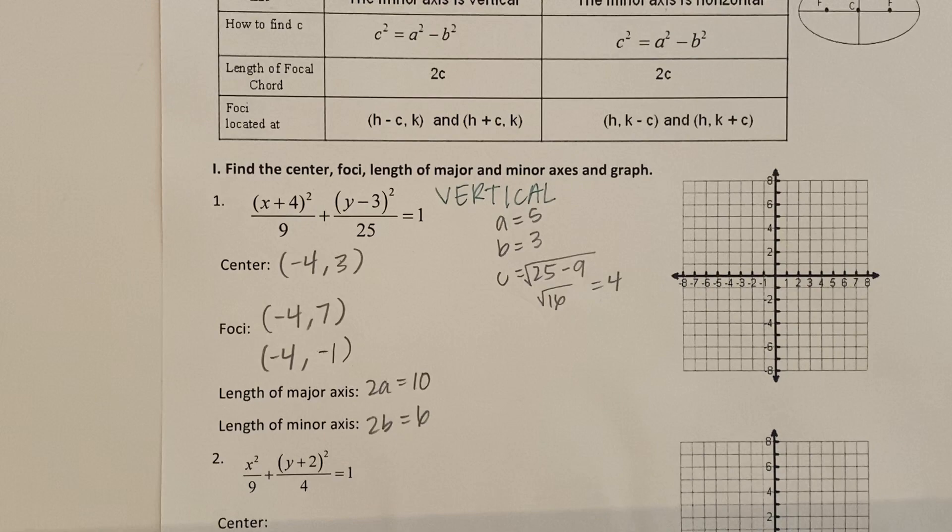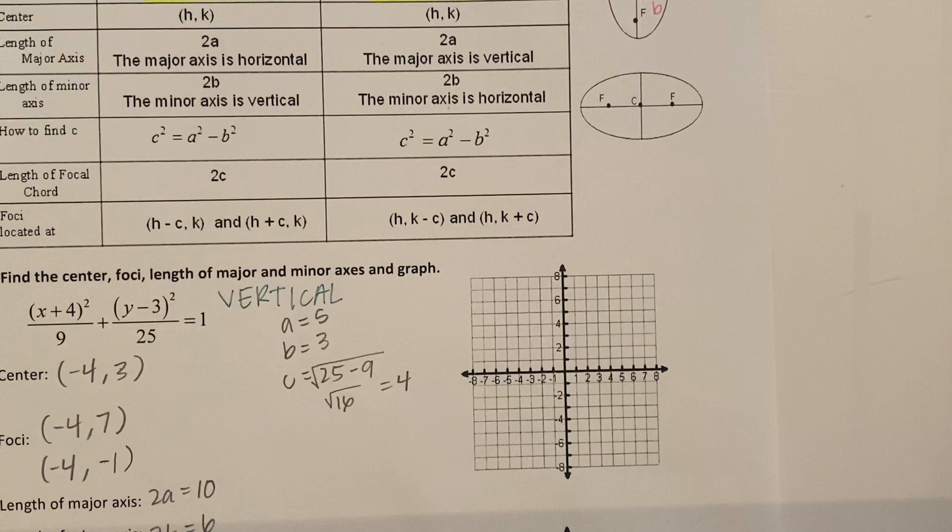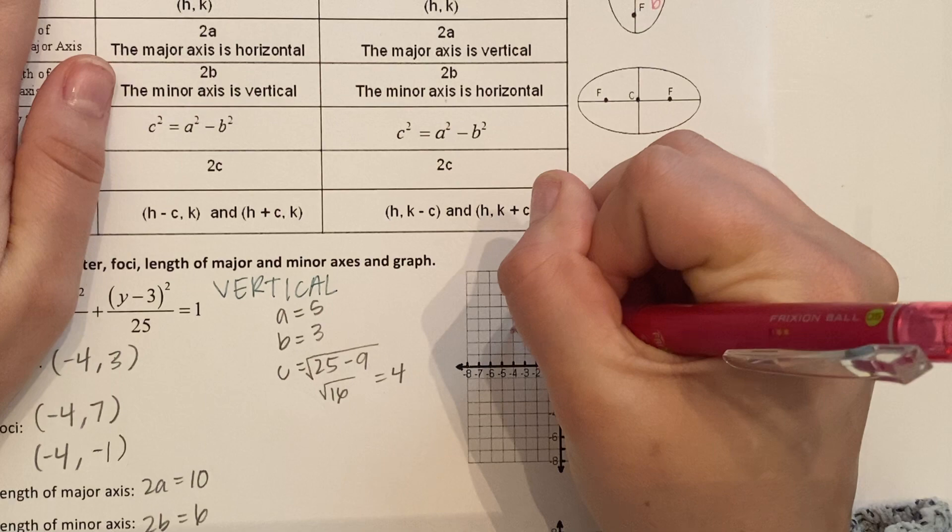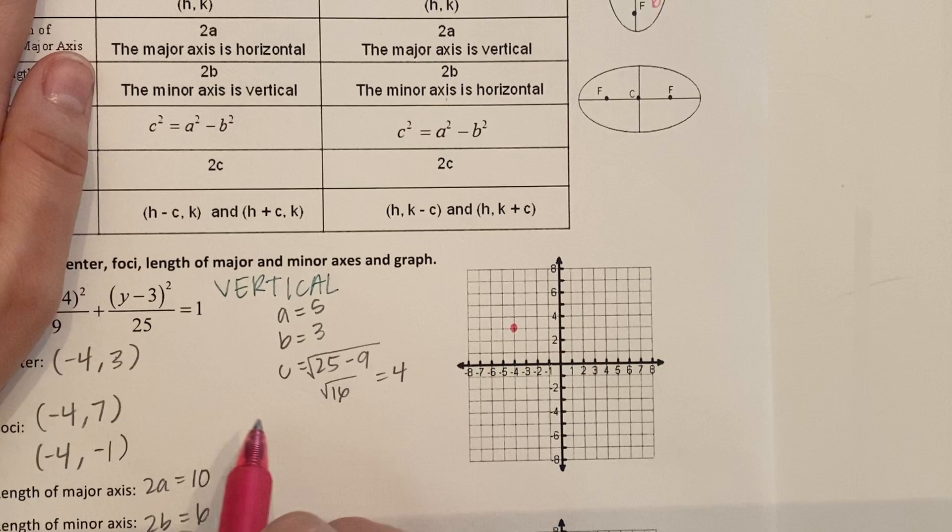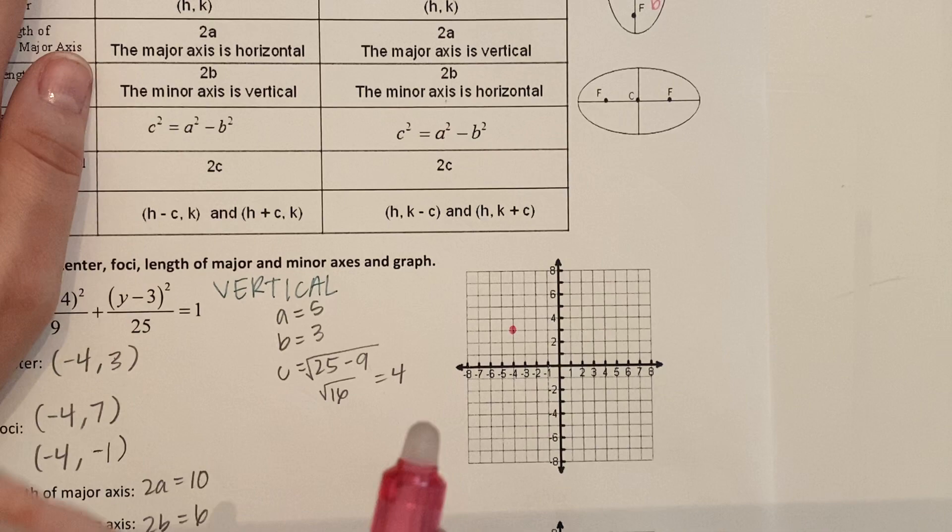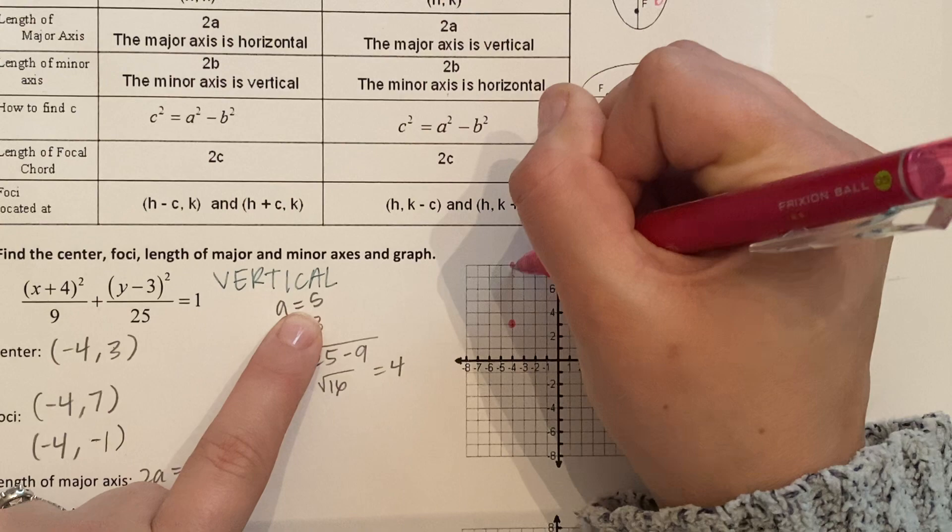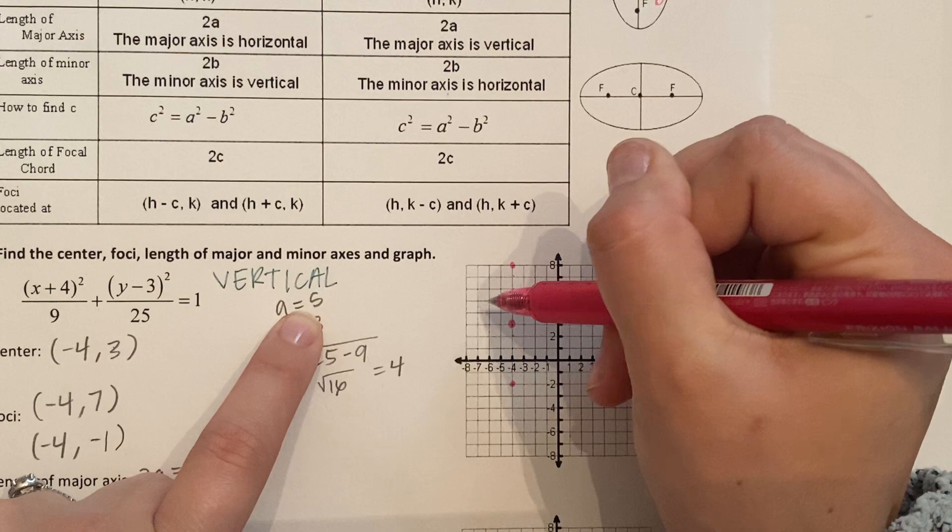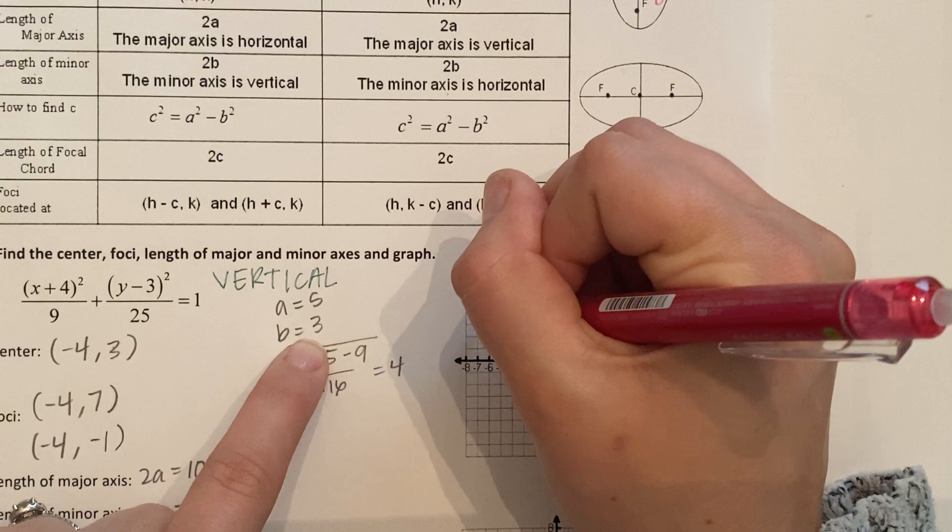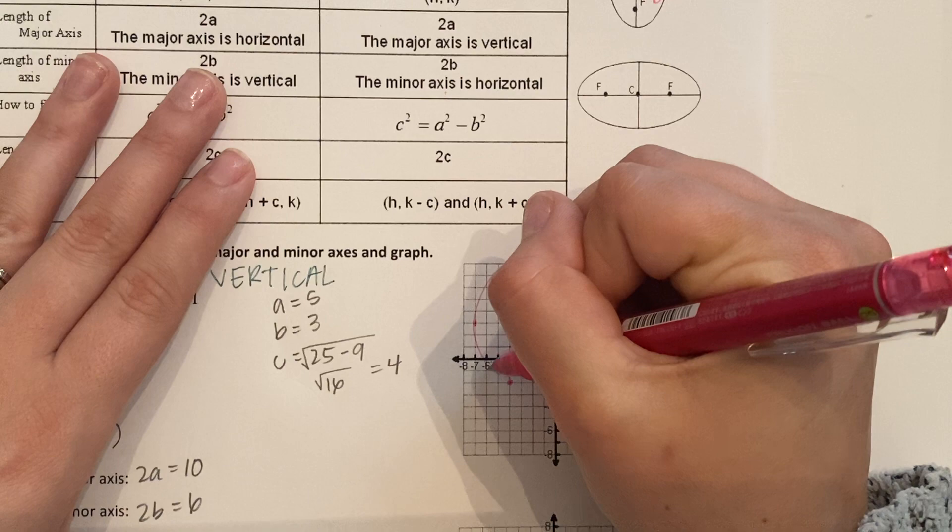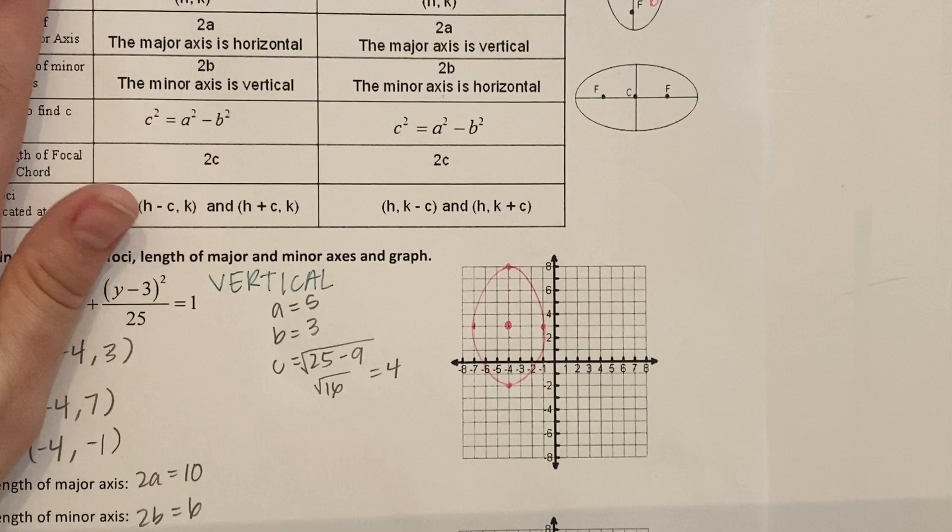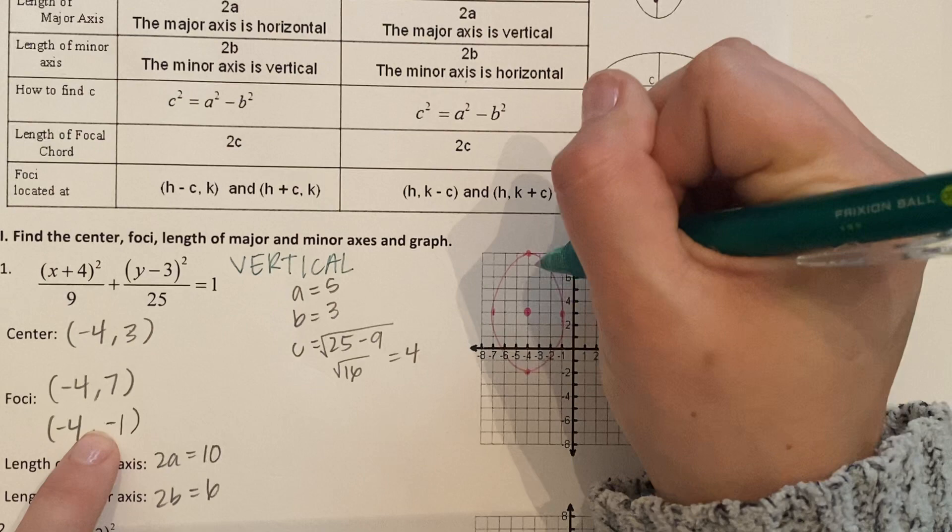So first thing I'm going to plot is my center, negative 4, 3. This is a vertical ellipse. We keep going back to that because it's really important. If you forget that, you're going to mess everything up. So now my major axis, that's A. It's vertical. I'm going to go up 5 and down 5. Minor axis, so the smaller distance goes left and right. I'm going left 3 and right 3. And then draw your ellipse. The last thing we want to include is the foci. We know the two points, so I'm just going to plot them. Negative 4, 7. Negative 4, negative 1. And there's our ellipse.